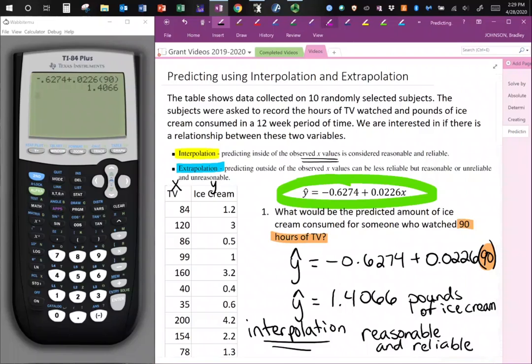Now first let's talk about reliable. It is reliable because you are close to the observed x values. 90 is close to the observed x values. So it is a reliable prediction.